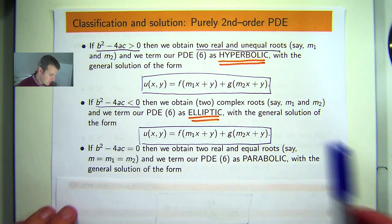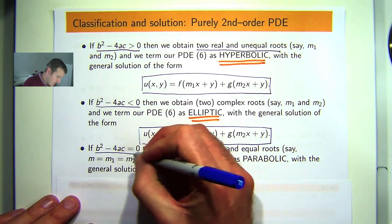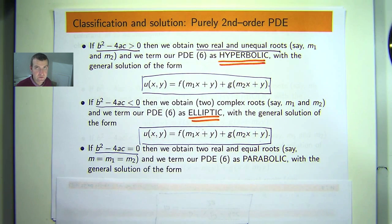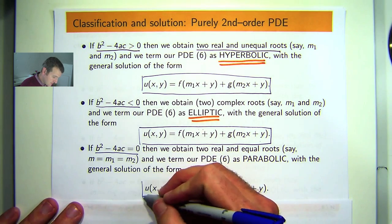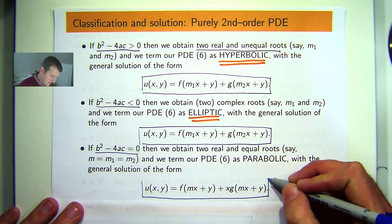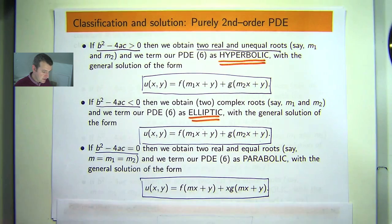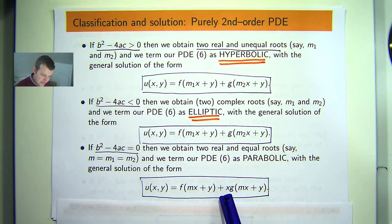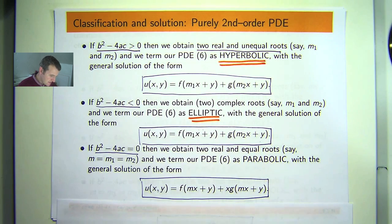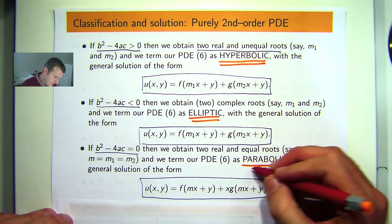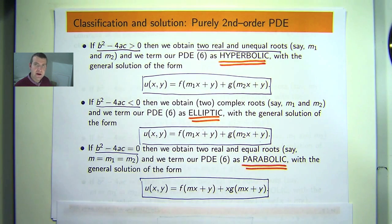And finally, if the discriminant is zero, then we obtain two real and equal roots, a repeated root if you like. And the form is the following. So note I've got an extra x out here. In this case, we term our PDE 6 as parabolic.